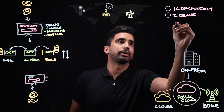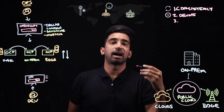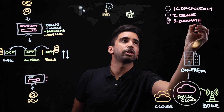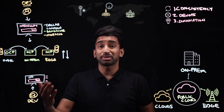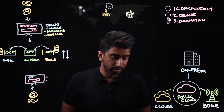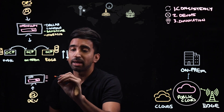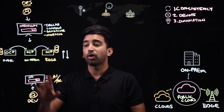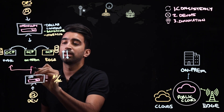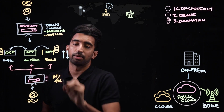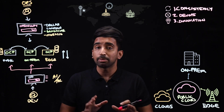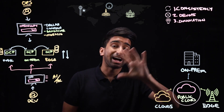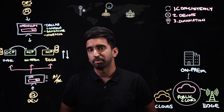Another key theme is innovation — specifically around high-value services. Let's say I want to do AI or machine learning capabilities, which public clouds generally offer. With distributed cloud, I can take those AI/ML capabilities and deploy them to any of these environments — public, on-prem, or edge. You're able to innovate with capabilities generally only available in public cloud and bring them to environments outside of the public cloud. That's one of the key capabilities of distributed cloud.